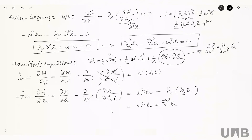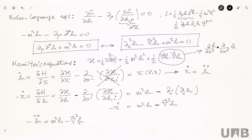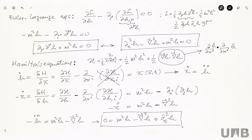Combining the two Hamilton equations: from ḣ = π, taking a time derivative gives ḧ = π̇. Substituting into -π̇ = m²h - ∇²h, we get -ḧ = m²h - ∇²h, or ∂²h/∂t² - ∇²h + m²h = 0. This is exactly the same equation as from the Euler-Lagrange approach — the two formalisms are completely equivalent.